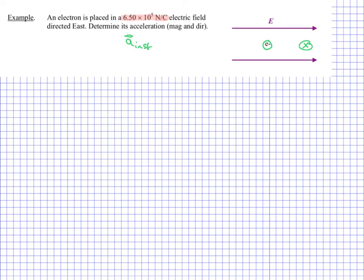Convention tells us field lines go from positive to negative. So if these arrows represent the field, they must be coming from a positive. An electron is negatively charged, so it's going to experience a force in the opposite direction — toward the positive source. Since the force is that way, the acceleration must be that way too. The direction of the acceleration is west.